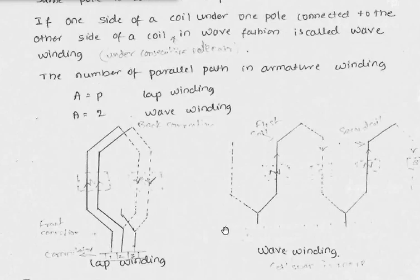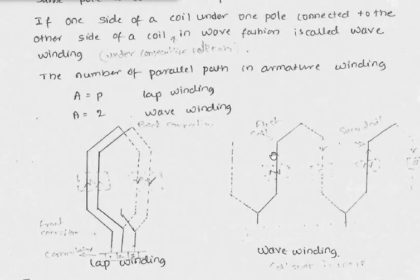In case of wave winding, there is a set of commutator segments. This is the first coil and this is the second coil. If one side of a coil under one pole is connected to the other side of a coil in a wave fashion — one coil is connected to the next coil in a wave fashion — it is called wave winding. If we have wave winding, the number of parallel paths A equals 2. So lap winding gives A equal to P, and wave winding gives A equal to 2.